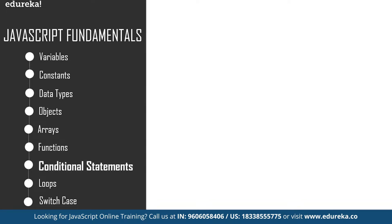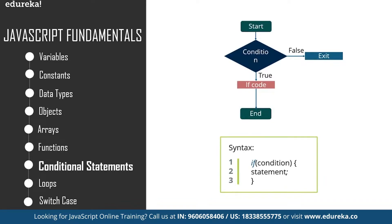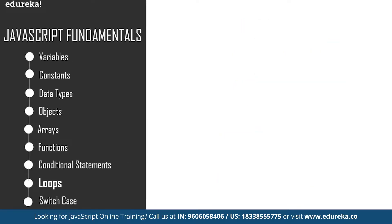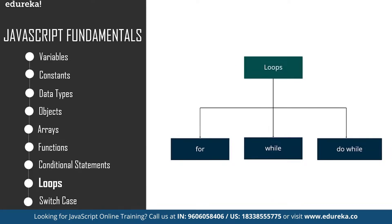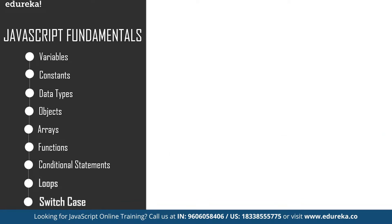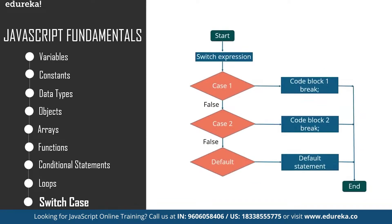For conditional statements, we have the if condition and the else-if condition. A conditional statement is a set of rules performed if a certain condition is met. The if statement executes a block of code only if the specified condition holds true, and the else statement executes a block of code if the same condition is false. Loops are used to repeat a specific block until some end condition is met — there are three categories of loops in JavaScript: the while loop, do-while loop, and for loop. Finally, the switch statement is used to perform different actions based on different conditions. The switch expression gets evaluated once, compared with the values of each case, and if there is a match the associated block of code is executed.